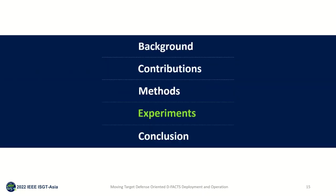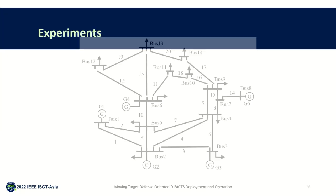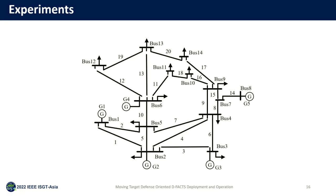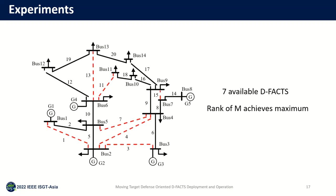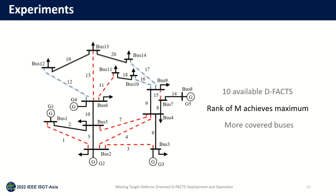Next, I will show the experimental results to illustrate the performance of the proposed method. The first experiment is the deployment scheme using the 14-bus system as an example. If we have seven available devices, the red lines are deployed with defect devices. The rank of IM achieves the maximum and there are still uncovered buses. However, when we have more devices available, our deployment scheme adds blue lines, and this deployment scheme protects more uncovered buses, enhancing the security of the system.